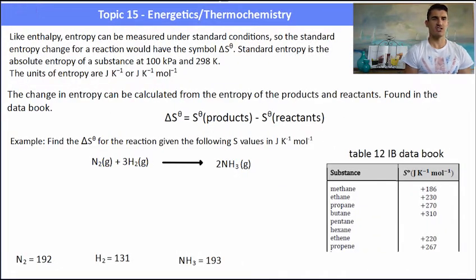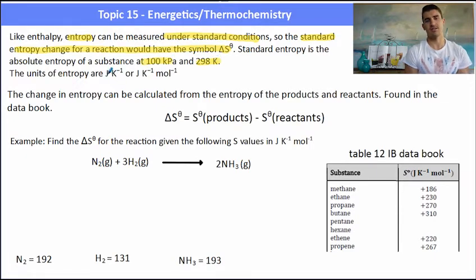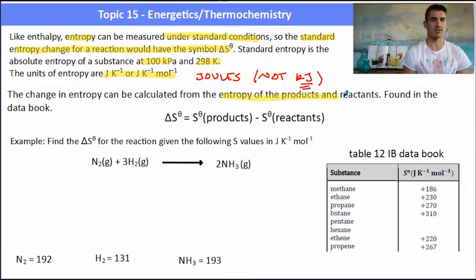Like enthalpy, entropy can be measured under standard conditions. The standard entropy change of a reaction has the symbol delta S naught, and the standard entropy is the absolute entropy of a substance at 100 kPa and 298 Kelvin. The units for entropy are joules per Kelvin, or joules per Kelvin per mole. It's really important to remember it's joules and not kilojoules — students often forget that. A number of entropy values can be found in the data booklet in Table 12.